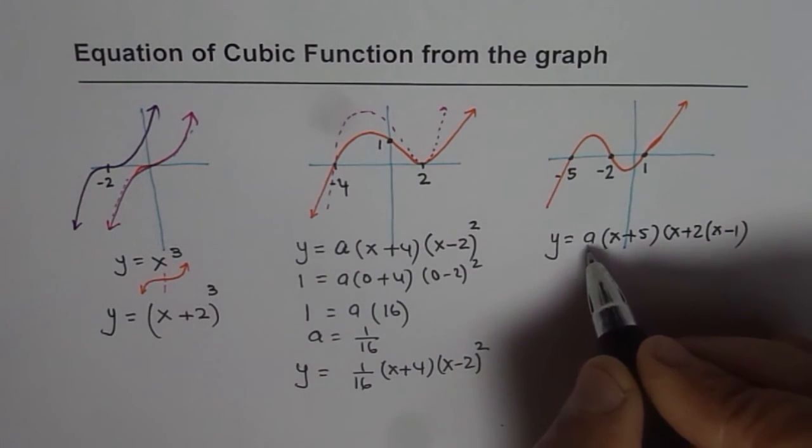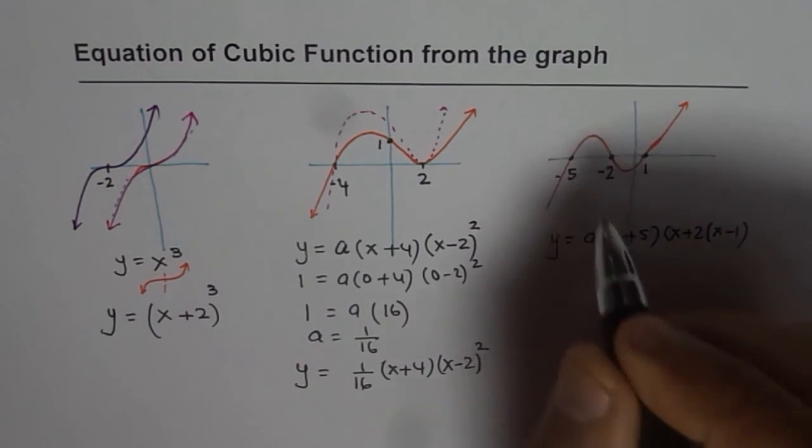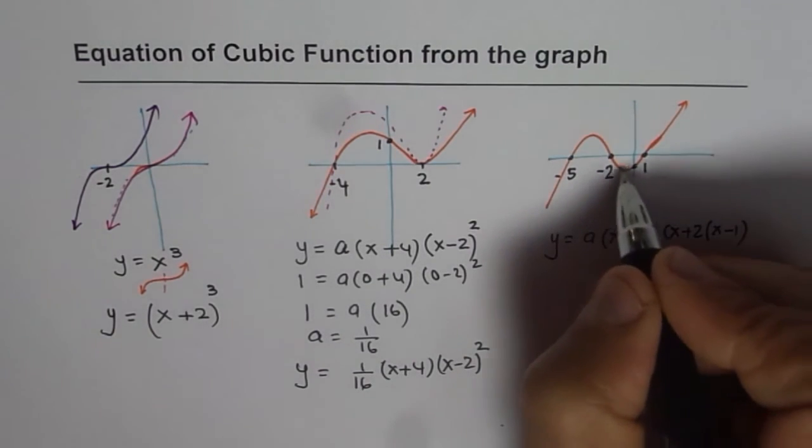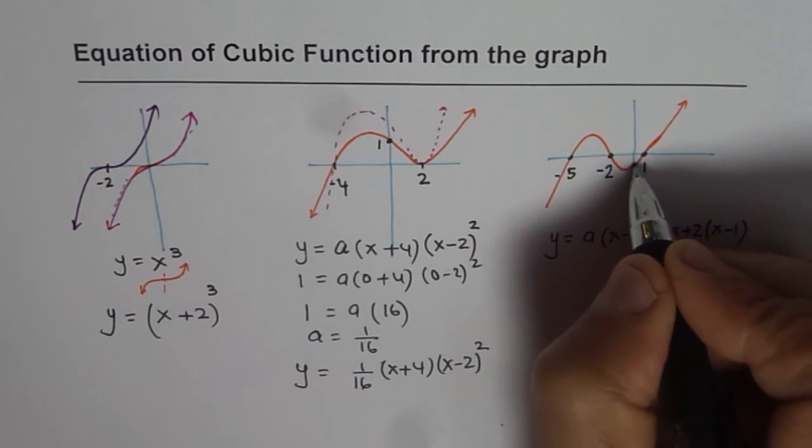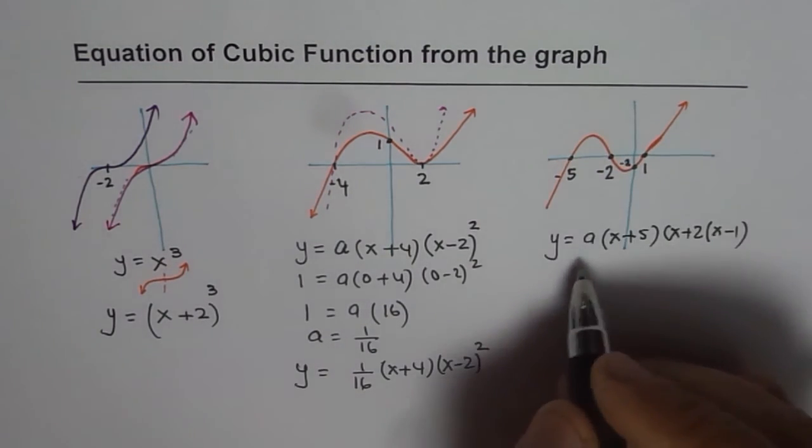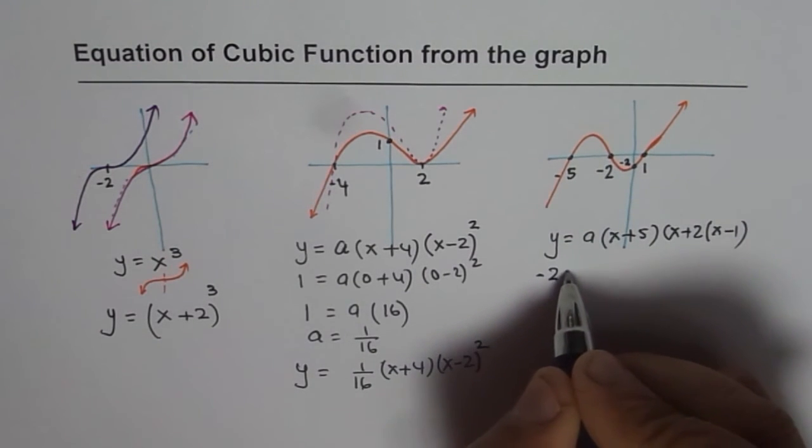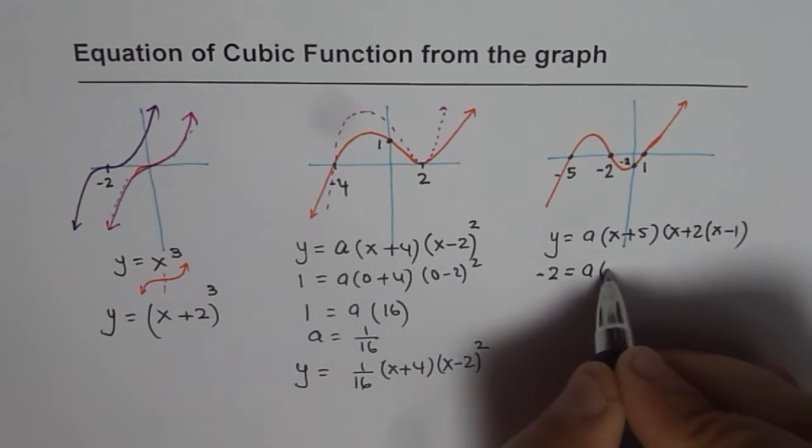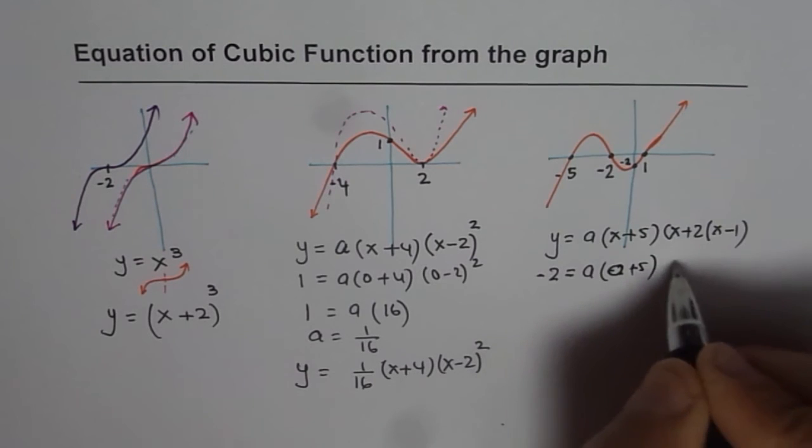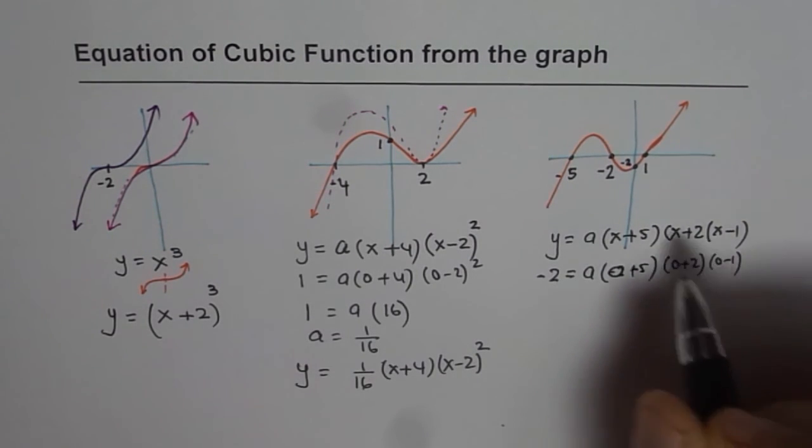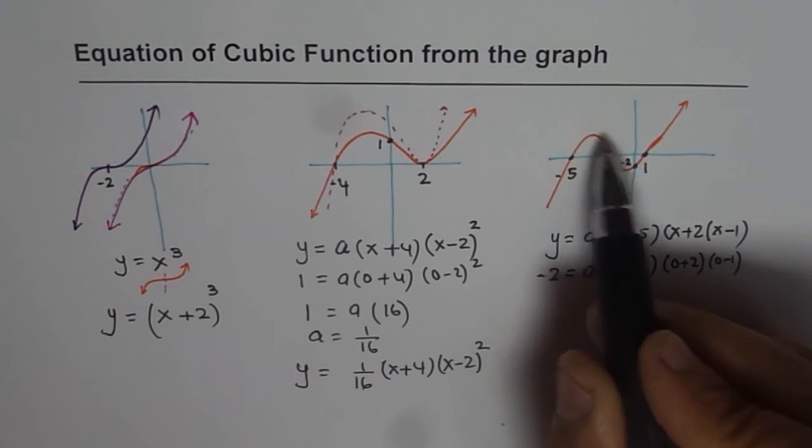To find a, we should know a point on the graph. So that is the y intercept. Let us say this point y intercept is minus 2 for example. Let's make it minus 2. In that case, for x 0, y is minus 2. So write minus 2 here, which is equals to a times x is 0, 0 plus 5, 0 plus 2, and 0 minus 1. Well, we could have taken point anywhere.